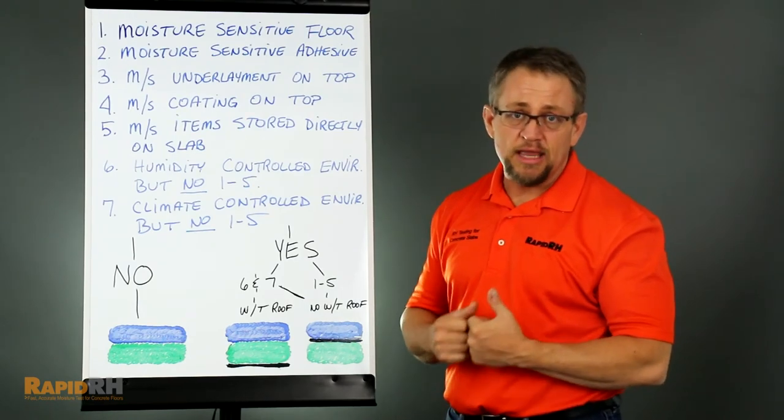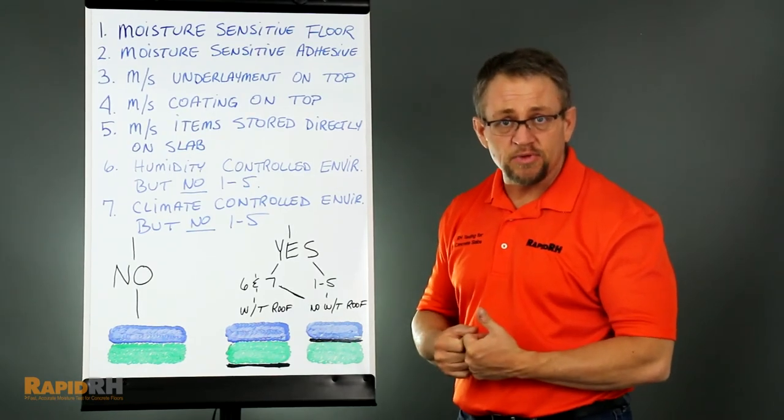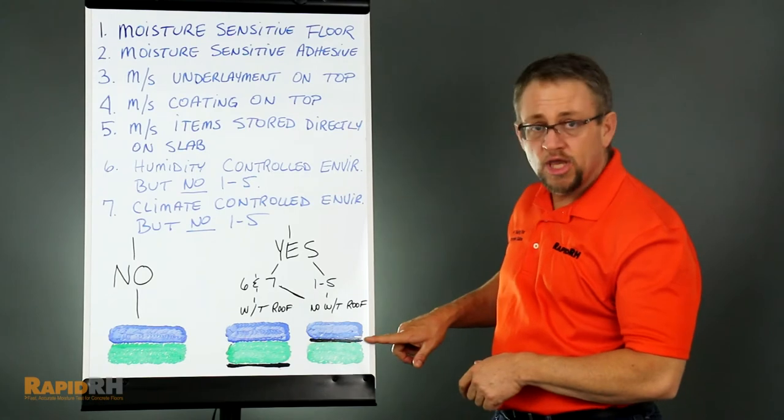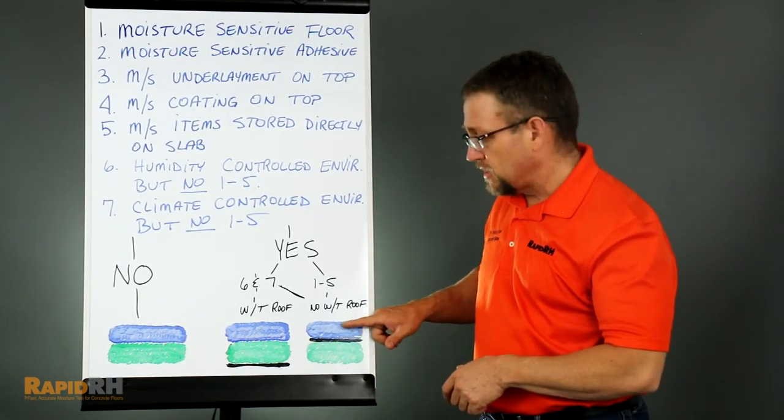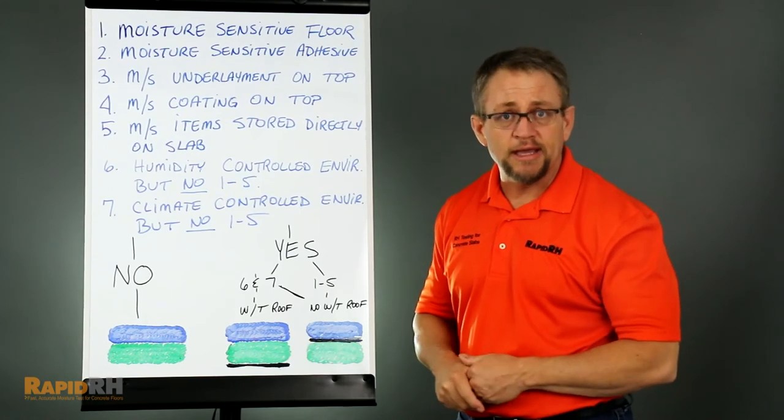If you answered yes to six and or seven, but there's not going to be a water-tight roofing system in place, then you come over here where you have sub-base, the vapor retarder, and the concrete slab directly on top of that.